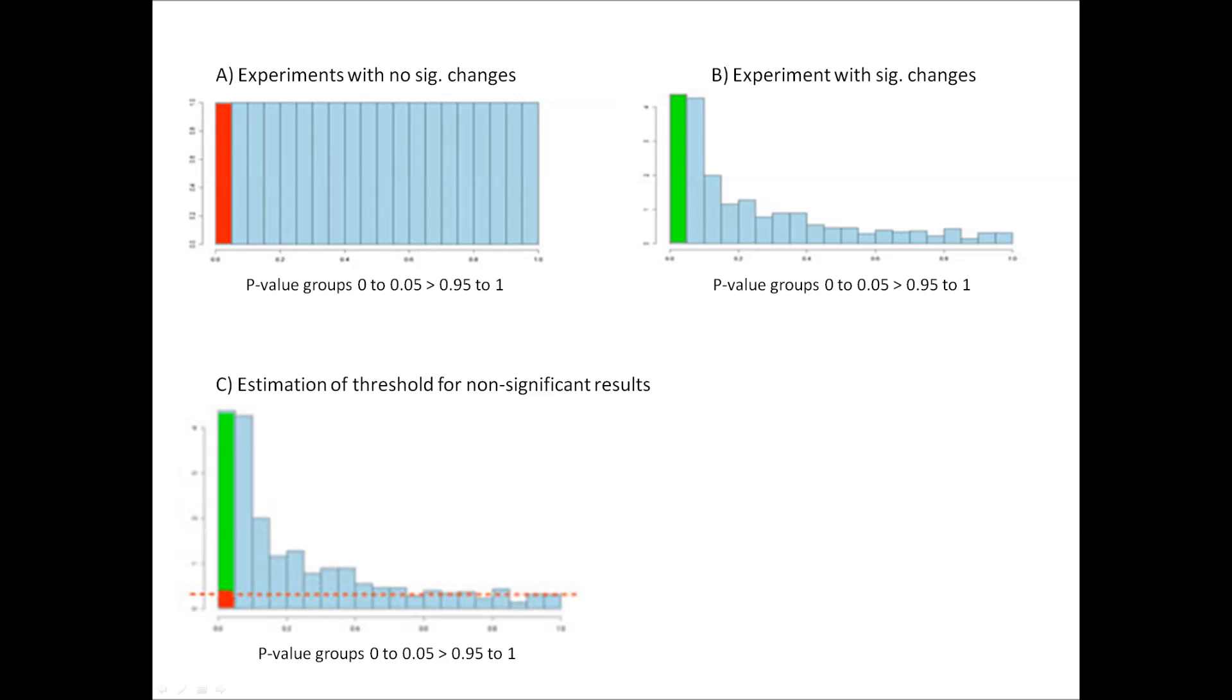In an experiment where there are no significant changes, shown in figure A, you would expect to see an even distribution of p-values. Whereas, in an experiment with significant changes, shown in figure B, you would expect to see many more significant p-values.